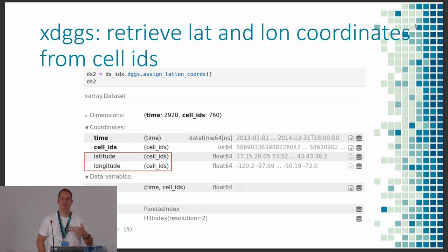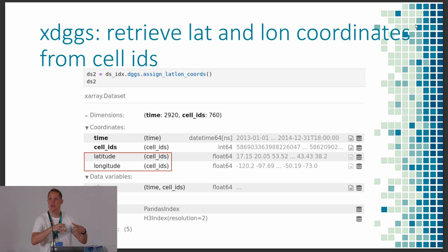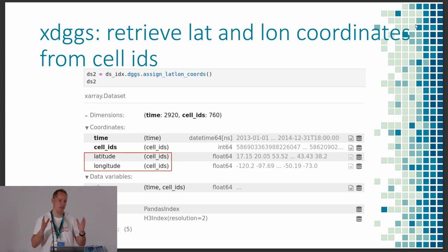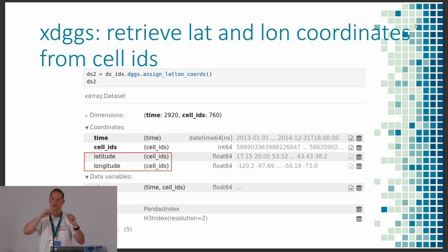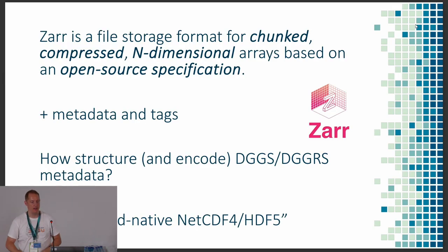Inversely, if you need to go back to lat-long space, you can always get the cell boundaries — the polygons or cell centroids — as lat-long, because the DGGS systems intrinsically know that conversion. It's basically like projections — the math is stable and you can go back and forth. So in order to store that meaningfully, we have been experimenting with Zarr.